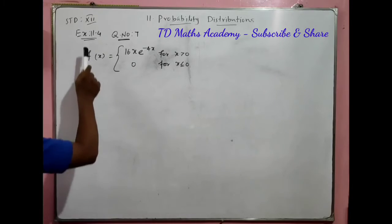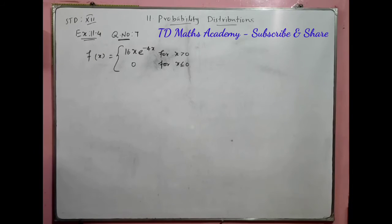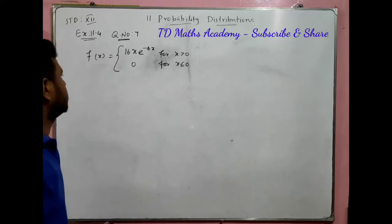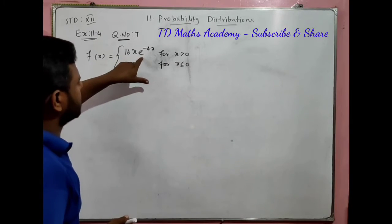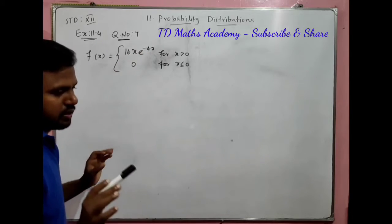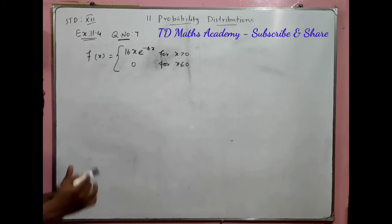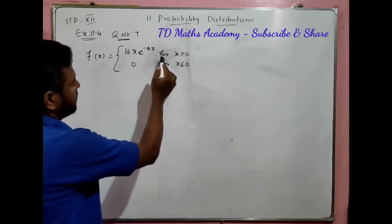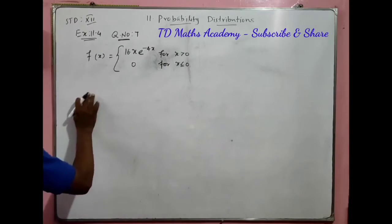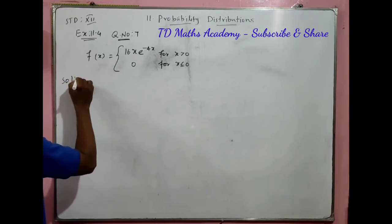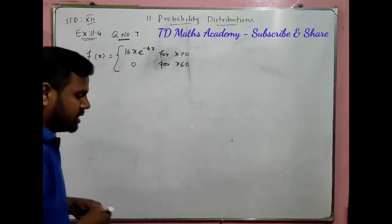Dear students, now I am going to teach Exercise 11.4 question number 7. f(x) equals 16x e^(-4x) for x greater than 0, otherwise 0 for x less than or equal to 0. The question asks to find mean and variance.